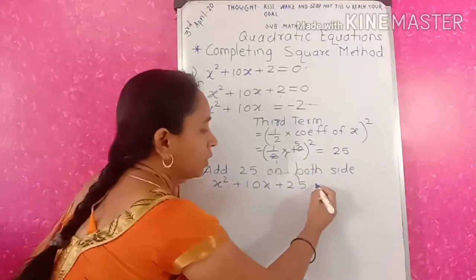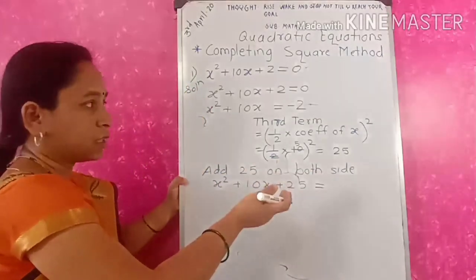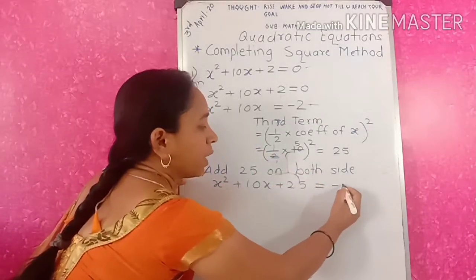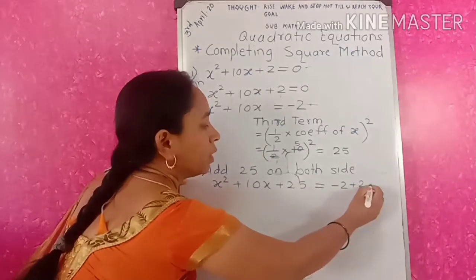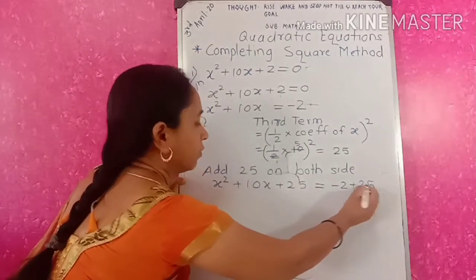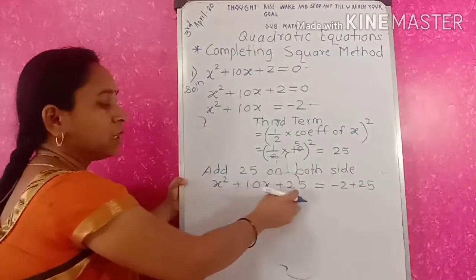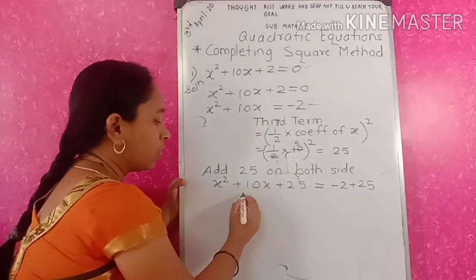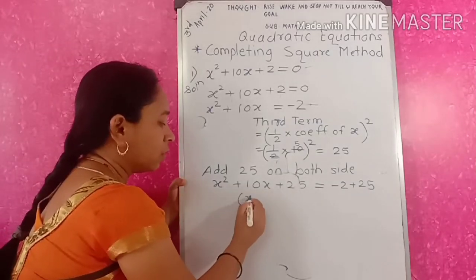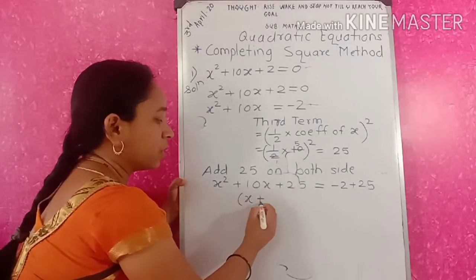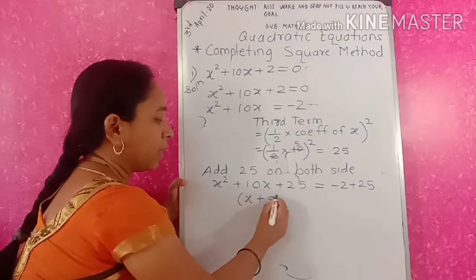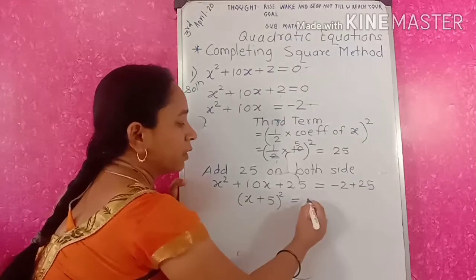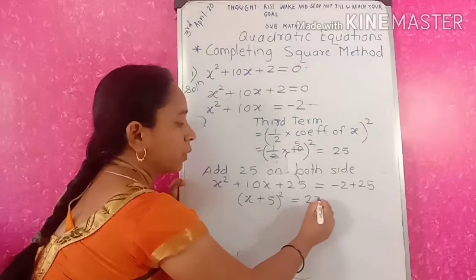I have to do the same on the RHS to balance the equation: minus 2 plus 25. Now here you will get the perfect square — this is the square of a term, (x + 5) squared. And on the RHS you will get the answer 23.